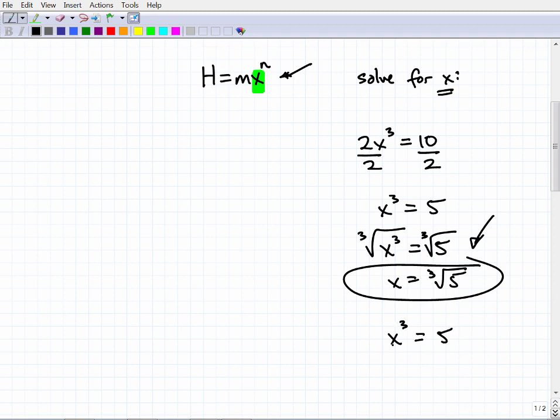This is an exponential type of equation, so I could just take both sides to the 1/3rd power. So I get X is equal to 5 to the 1/3rd, and you should know that that is equivalent to the cube root of 5.